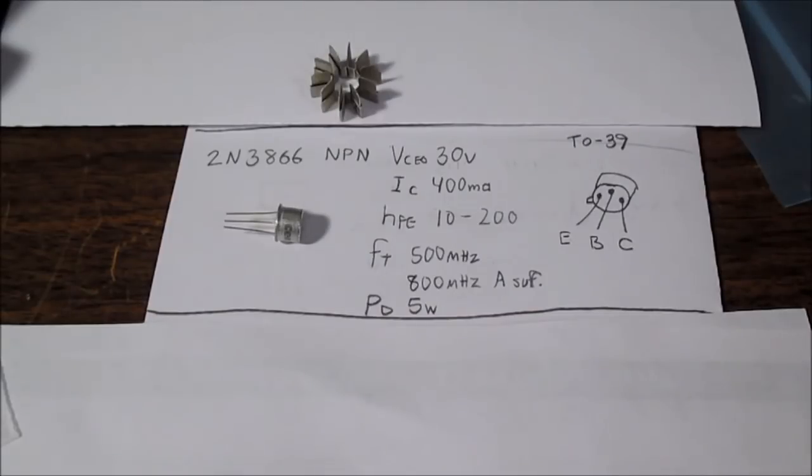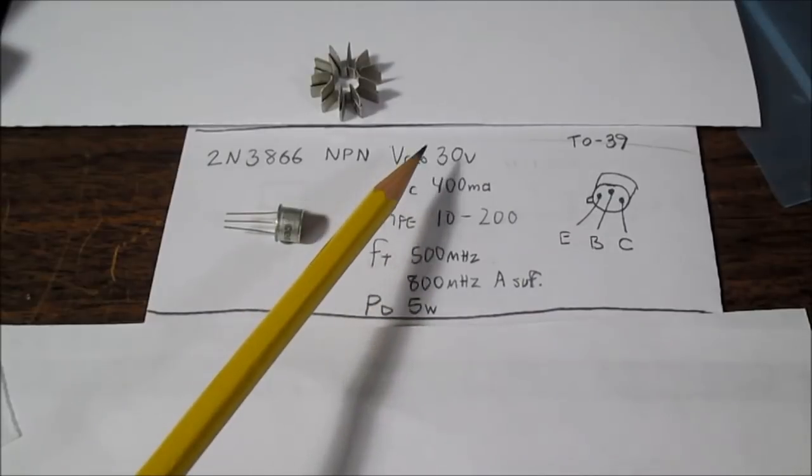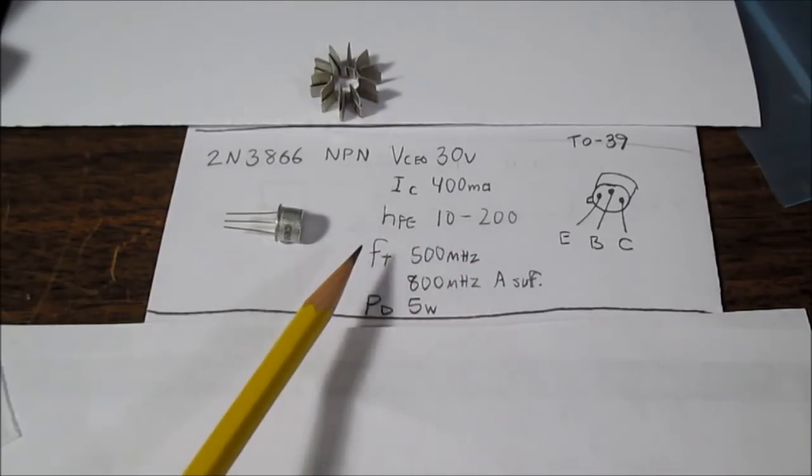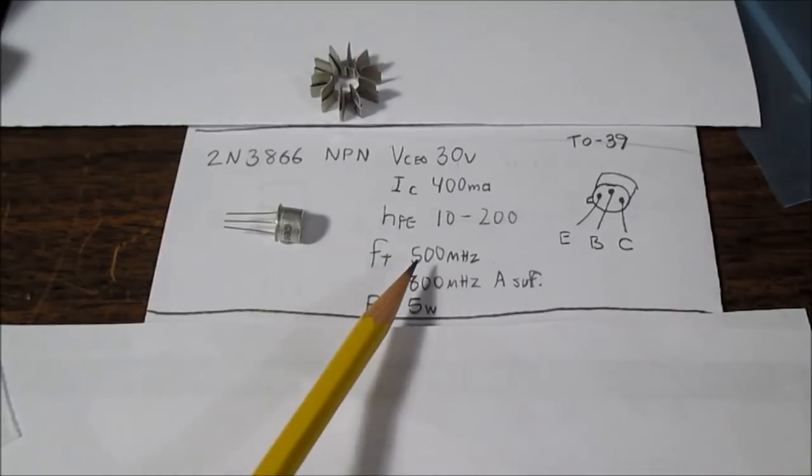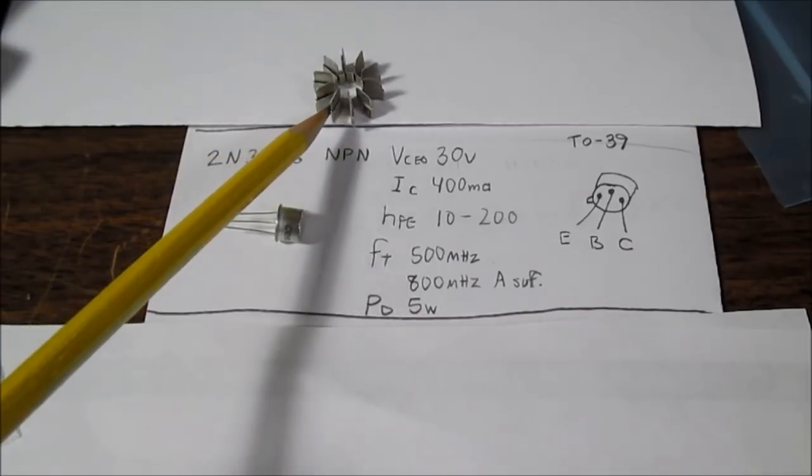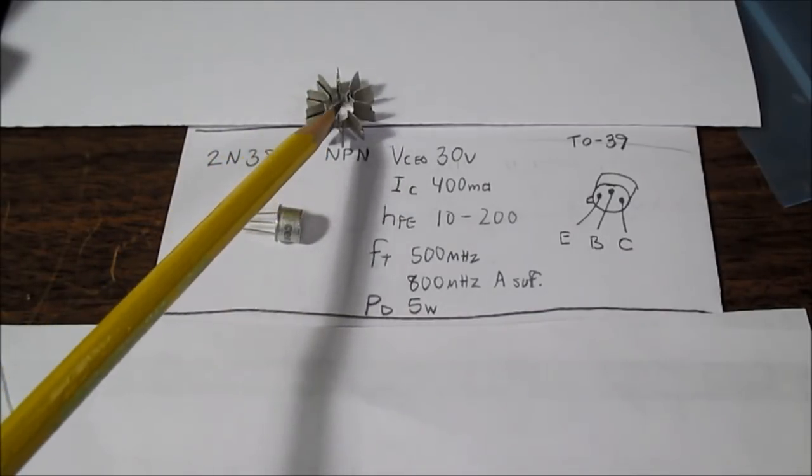Next up is the 2N3866 NPN RF transistor. This is popular as an RF amplifier final stage, or a driver stage in higher power circuits, and AM and FM homebrew type transmitters. I'd say it's good for a watt, maybe 2 in an RF output stage. Collector emitter voltage is 30, collector current 400 milliamps. The gain is pretty wide, at 10 to 200. Transition frequency is 500 MHz, or if you get the A suffix, it goes up to 800 MHz. And a 5 watt power dissipation. Here I have a little heat sink that would help it dissipate maybe about a watt. You'd probably want something larger if you're going to go beyond that.